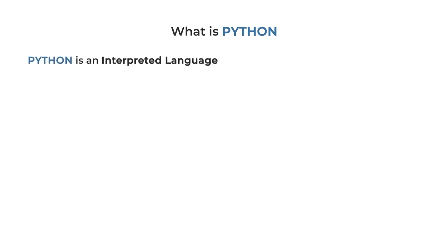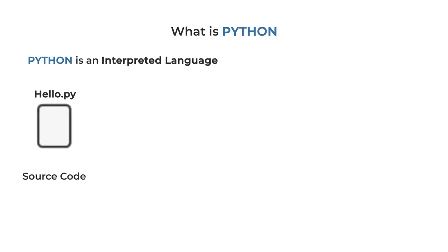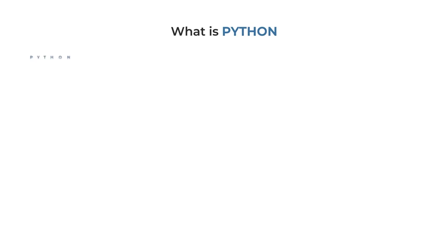Python is an interpreted language. What does interpreted language mean? It doesn't need to be compiled. You can interpret it line by line, converting it into machine language. Every time you run a Python file, it goes through the interpreter.